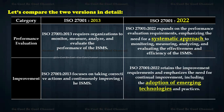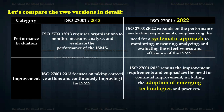For performance evaluation, the 2013 version requires organizations to monitor, measure, analyze, and evaluate the performance of the ISMS. The 2022 version expands on this, emphasizing a systematic approach to monitoring, measuring, analyzing, and evaluating the effectiveness and efficiency of the ISMS. For improvement, 2022 retains the improvement requirements and emphasizes continual improvement including the adoption of emerging technologies and practices.